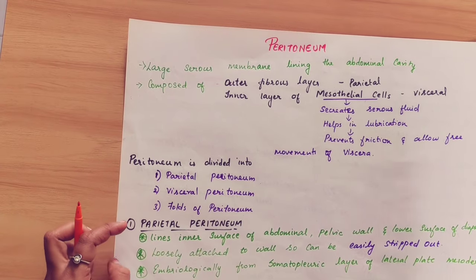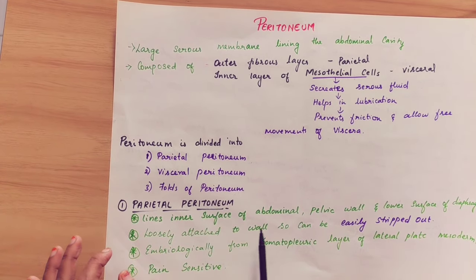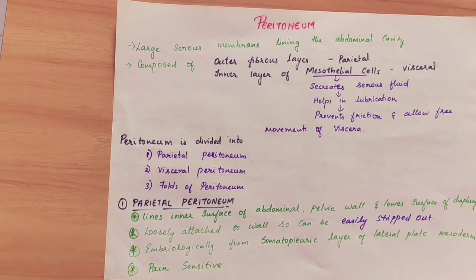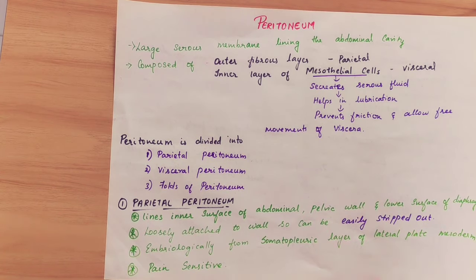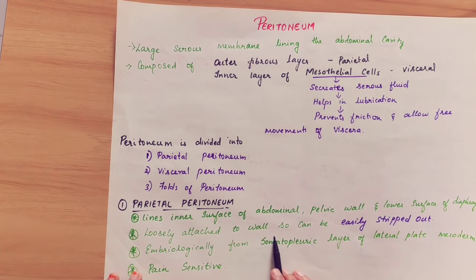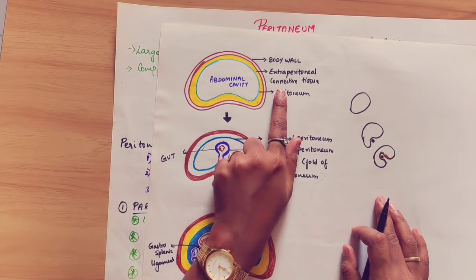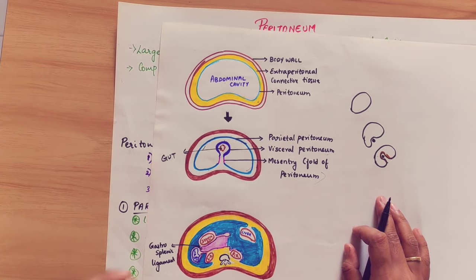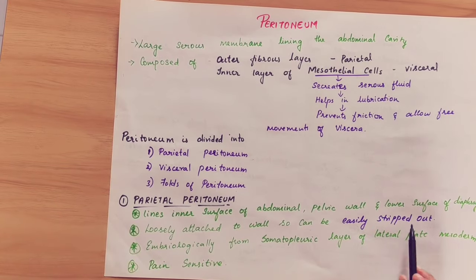Peritoneum is divided into parietal peritoneum, visceral peritoneum, and folds of peritoneum. Parietal peritoneum lines the inner surface of the abdominal wall, pelvic wall, and the lower surface of the diaphragm. It is loosely attached to the wall, so it can be easily stripped out.